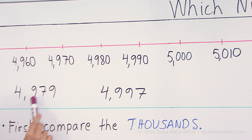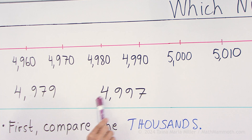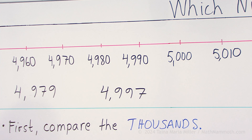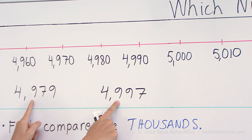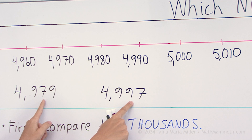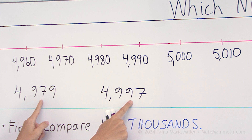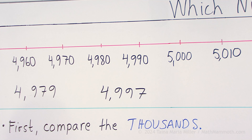Four thousand nine hundred seventy-nine, four thousand nine hundred ninety-seven. The principle we use is we compare the thousands and they are the same — four thousand in both numbers. So then we move to the hundreds — nine hundred in both numbers. And then in the tens we see a difference: seven versus nine tens. So this number is the bigger number.